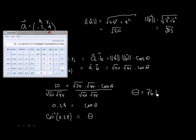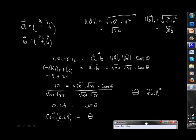76.11 degrees. So, the angle that's formed between the two vectors, a and b, is 76.11 degrees.